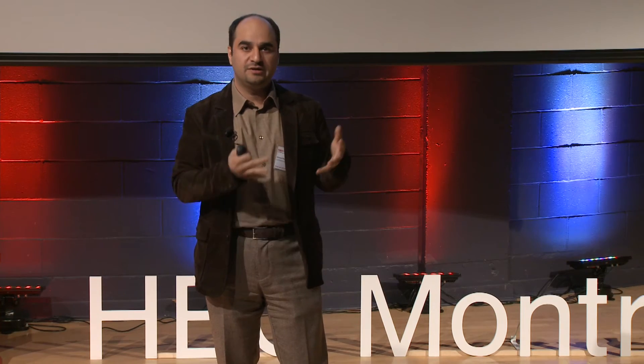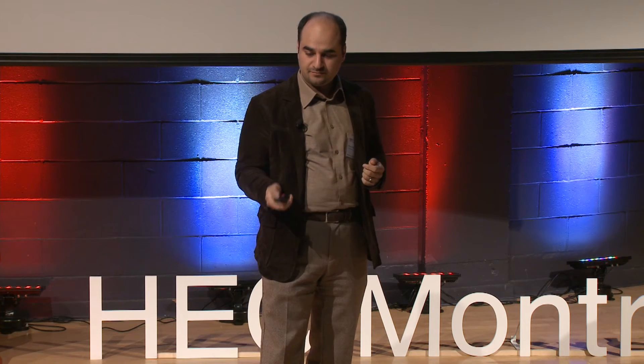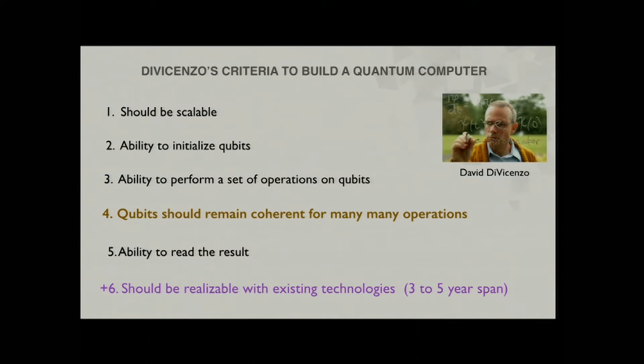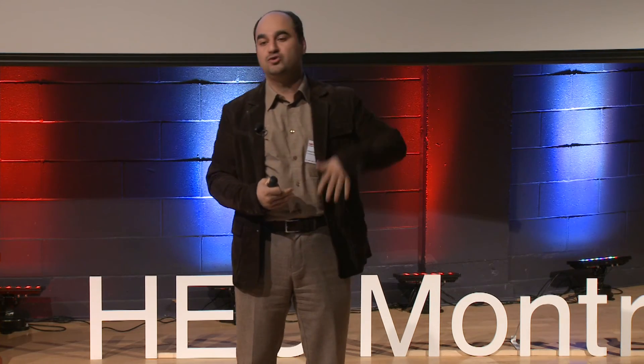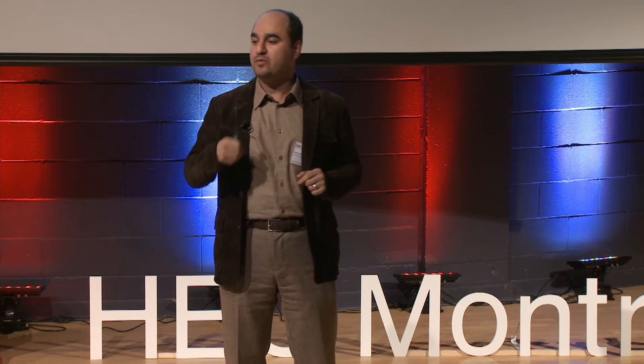These are the five bases that any scientific team tries to prove their system has. I'm going to add another condition — one that has nothing to do with quantum physics or science, but everything to do with me being an engineer doing business. The quantum computer should be realizable with existing technologies. It shouldn't take 20 years to create new technologies to build the machine, because it's very difficult to convince the private sector to invest in something that pays off 20 years down the road. But if we start from existing technologies, we could probably have it in the next three to five years.